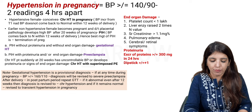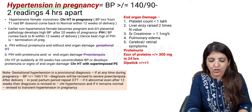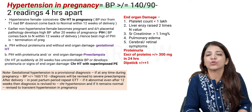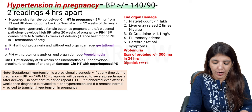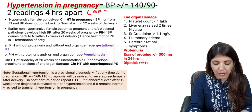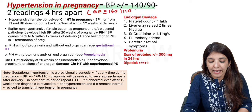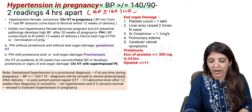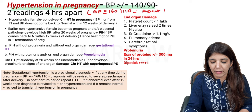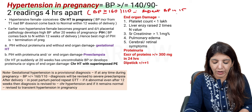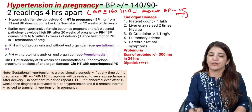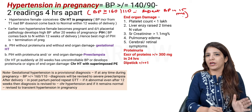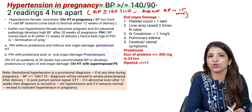Hypertension is defined in pregnancy if BP is more than 140 by 90 on two occasions four hours apart. Please remember if BP is more than 160 by 110, then you don't have to wait for four hours — you have to repeat BP in 15 minutes, because in this case you have to give her antihypertensives immediately.